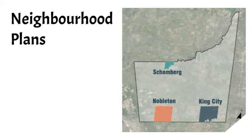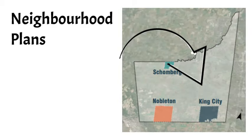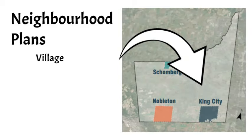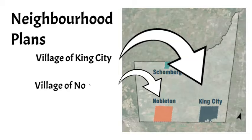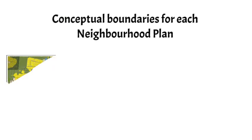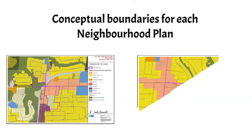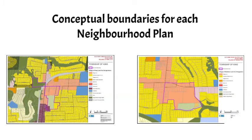The Township of King is initiating a study to develop two neighborhood plans that will guide future growth for strategic locations in the villages of King City and Nobleton. Conceptual boundaries have been prepared for each neighborhood plan to identify lands that will be reviewed and considered through the study.